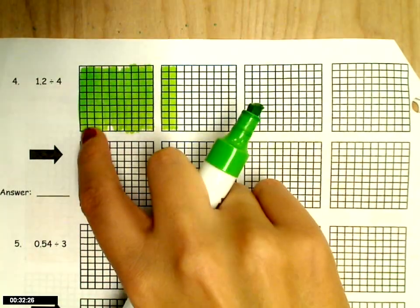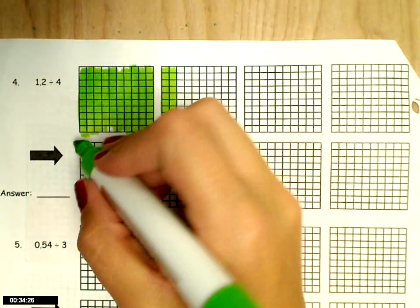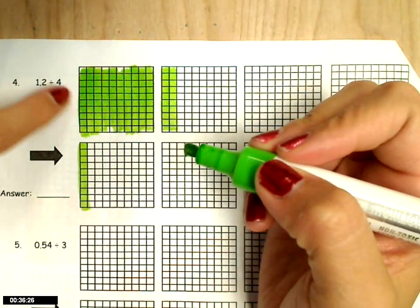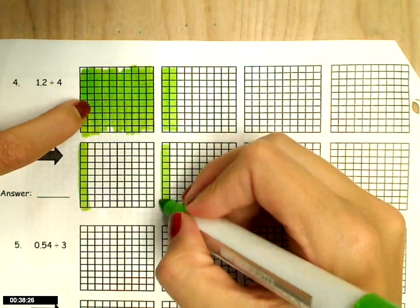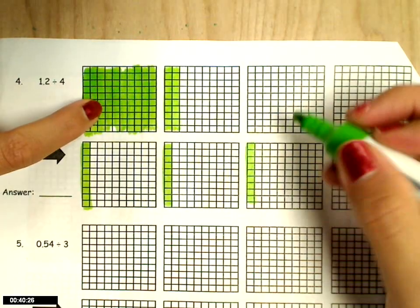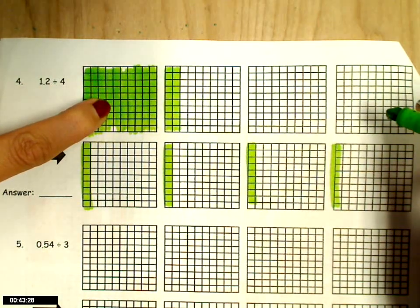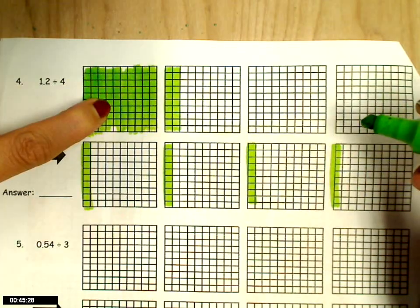And what I'm really going to do is I'm going to take 1 and put it in a group, take the second one and put it in the other group, take the third, put it in a group, take the fourth, put it in a group, and continue to do that until I've run out of tenths.